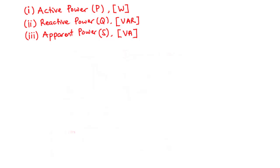Active power is sometimes called the actual power, the true power, the real power, and so on. It is the average power in watts delivered to a load, and thus depends on the load resistance R. The reactive power is a measure of the energy changes between the source and the reactive part of the load, and thus depends on the load reactance X. The apparent power is the combination of the active power and the reactive power.